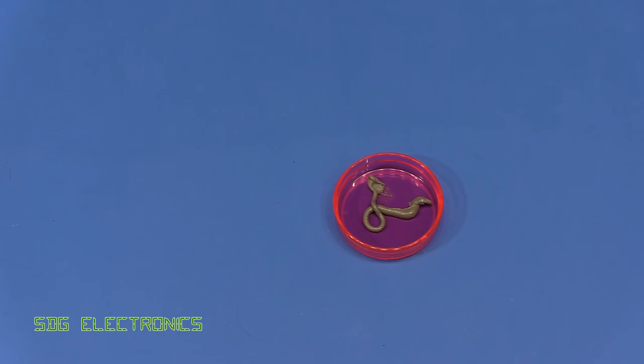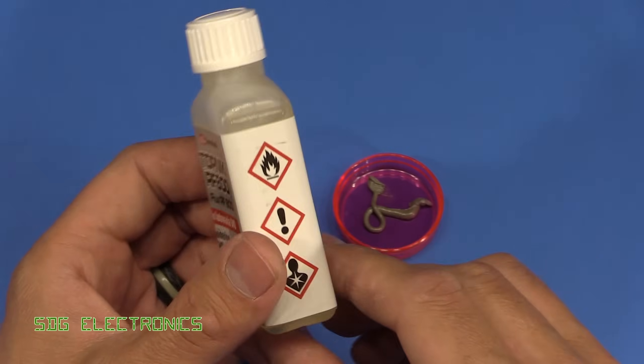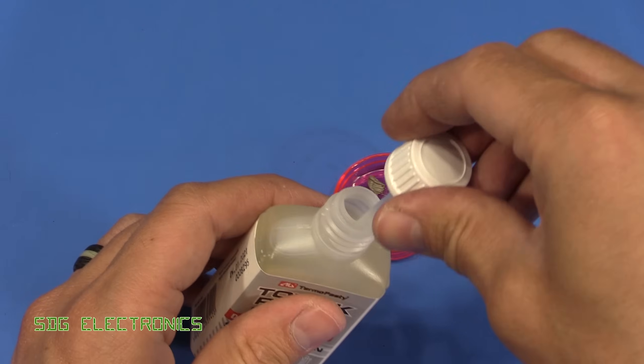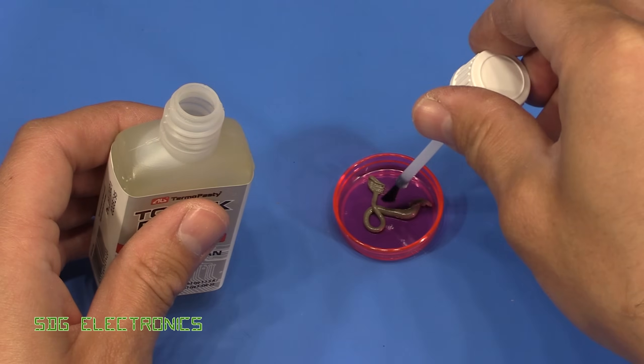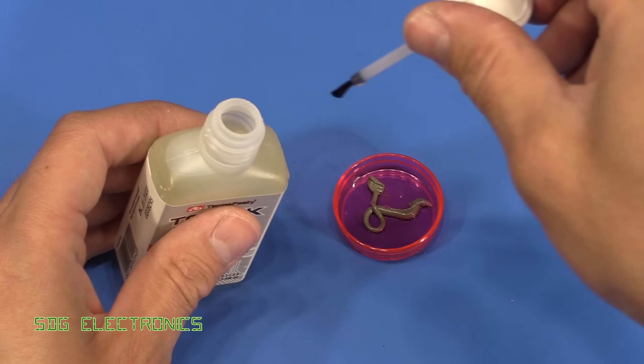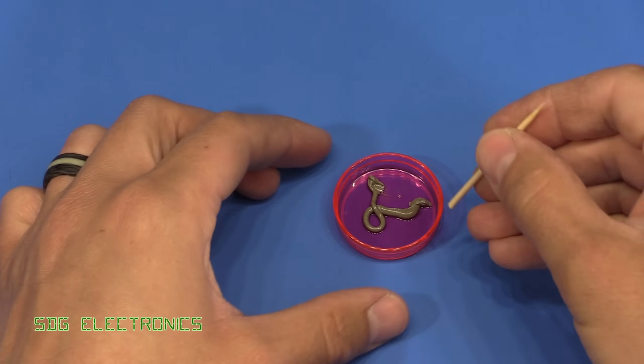All you need to do is get some no-clean liquid flux. You don't need to put very much in to get it back up to working condition—just put a couple of drops in here and give it a good mix around.